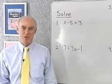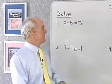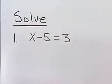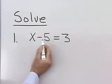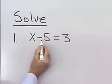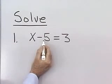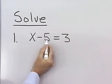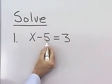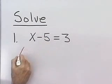Let's try it with our first problem. I have x minus 5 is equal to 3. What I want to do is solve this for x. I want x by itself, so I'm going to add positive 5 to both sides of the equation — that way, negative 5 plus positive 5 will be 0.